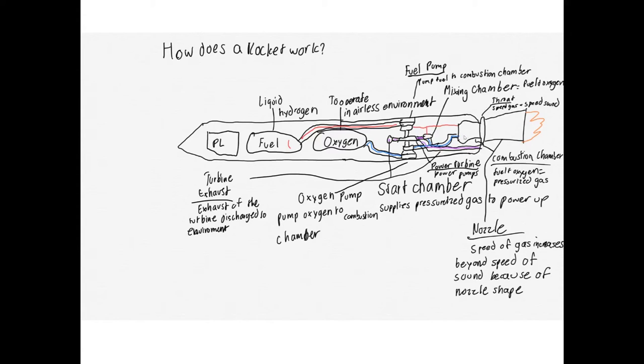And what happens in the combustion chamber, it uses the fuel and the oxygen to create pressurized gas. And then, at the throat, because of how high speeds the pressurized gas is already going at, it reaches the speed of sound at the throat. And because of the bell shape, the pressurized gas leaves the rocket faster than the speed of sound.